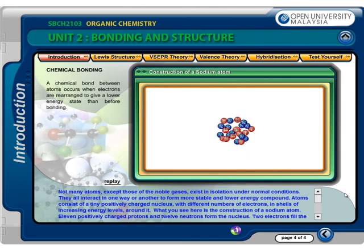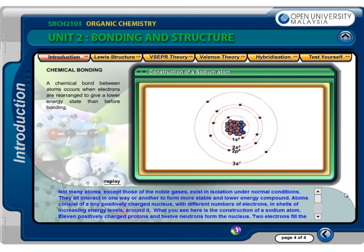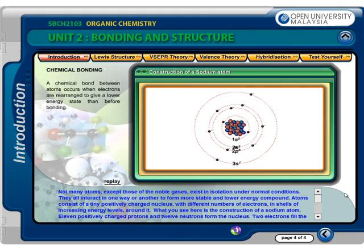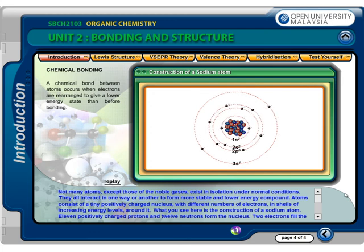Not many atoms, except those of the noble gases, exist in isolation under normal conditions. They all interact in one way or another to form more stable and lower energy compounds. Atoms consist of a tiny, positively charged nucleus with different numbers of electrons in shells of increasing energy levels around it. In a sodium atom, 11 positively charged protons and 12 neutrons form the nucleus; 2 electrons fill the first shell, 8 electrons fill the second shell, and a single electron occupies the outer shell, called the valence shell.